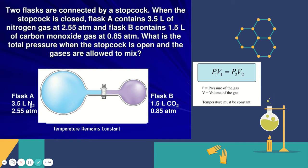And then flask B contains 1.5 liters of carbon monoxide, a different gas, and then it says carbon monoxide in the question but they wrote CO2 here so sorry carbon monoxide is just CO we just disregard that two. And then at 0.85 atm it says what is the total pressure when the stopcock is opened.